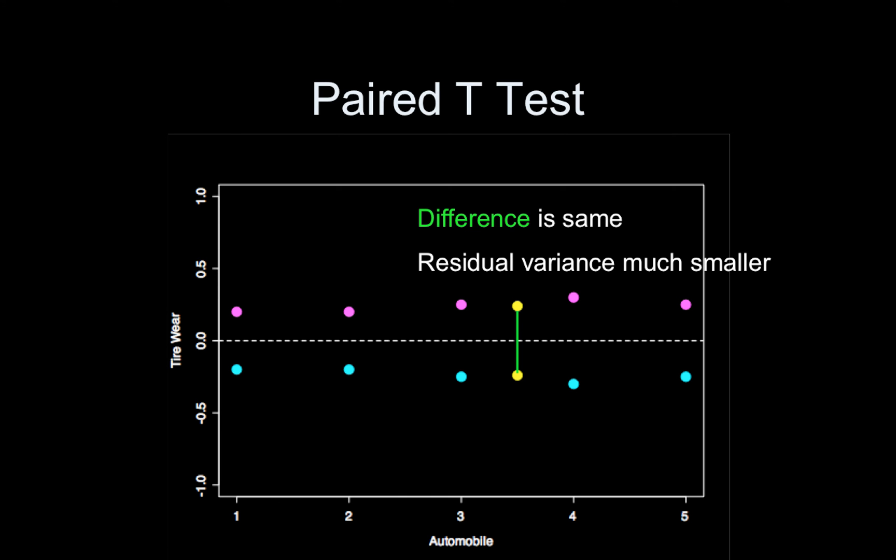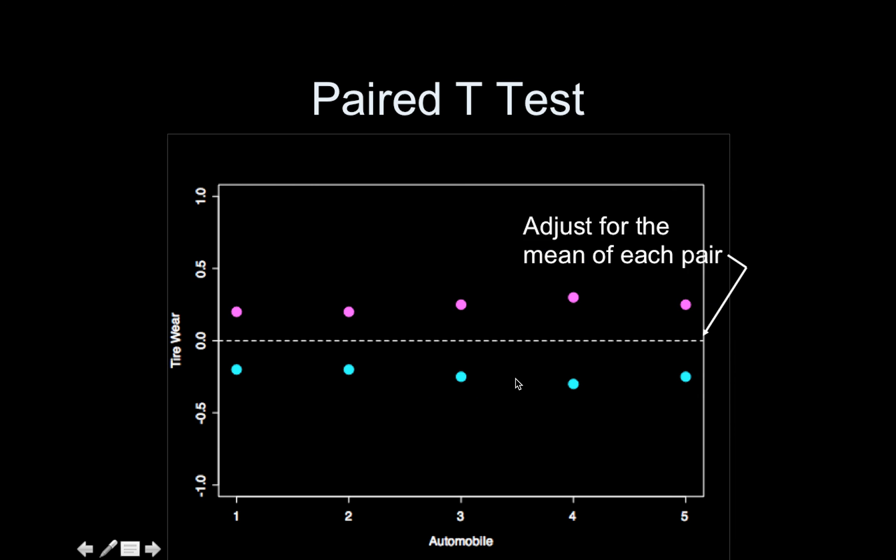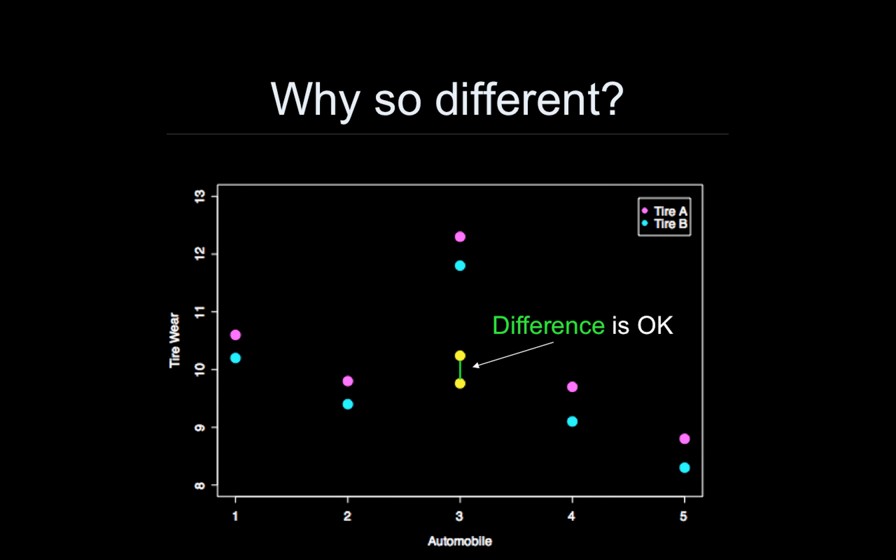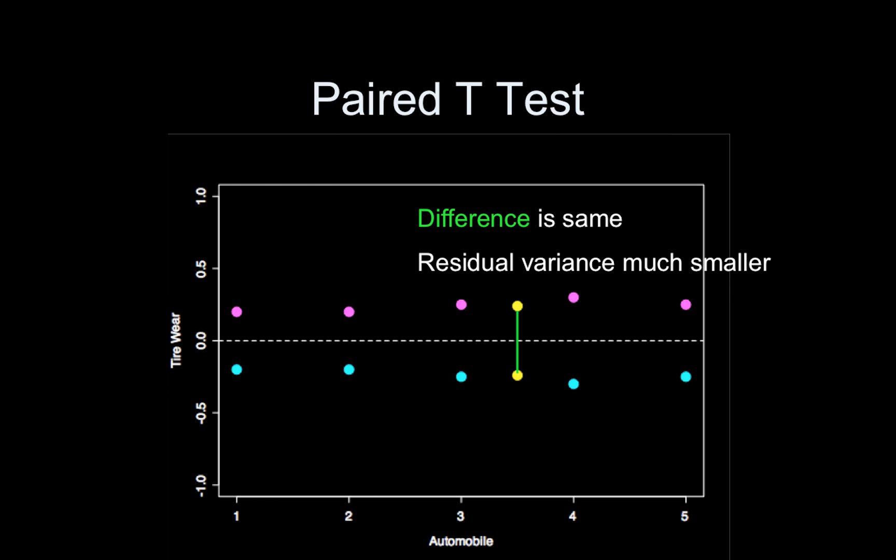The difference is exactly the same. Remember, the y-axis changed, but this distance here between A-hat and B-hat is exactly the same as this difference right here. It's just a different y-axis. That didn't change. It's exactly the same. What's changing are the residuals. The residual variance is obviously much smaller, because you can see as you look across, these are much more close to this point, and these are much more close to this point, which is the estimate of tire B. That reduction in residual variance is what gives your p-value a little boost. And by boost, I mean it decreases it.